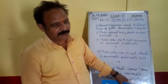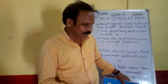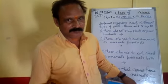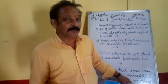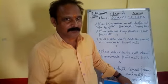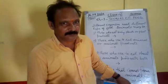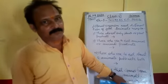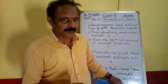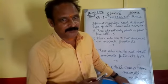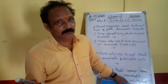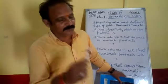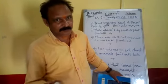As you know, different animals need different types of food. All organisms do not eat the same food. For example, your food is different from a puppy's food. A puppy's food is different from a cow, buffalo, or goat. Even a lion or tiger's food is different from ours. So, different organisms need different kinds of food.